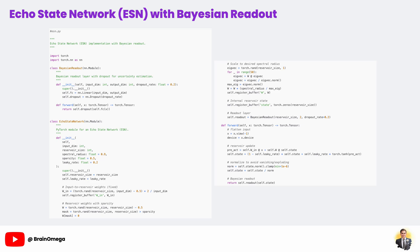Next, the W matrix sets up the reservoir's internal connections. These are also random and sparse, meaning each neuron only connects to a small fraction of the others. Before we use this matrix, we adjust its spectral radius — the largest absolute value among its eigenvalues.